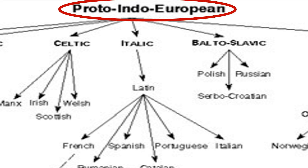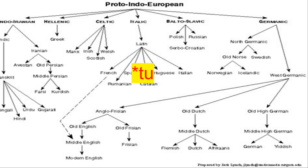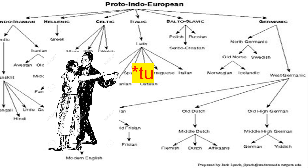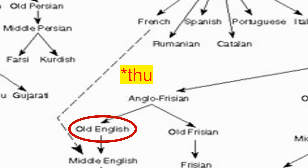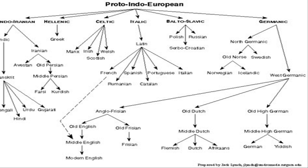Back in the days of Proto-Indo-European, the word 'to' was a second-person singular pronoun, meaning the person you're talking to. This pronoun had become 'thou' in the days of Proto-Germanic, 'thou' in early Old English, and then later in Old English settled on 'thou'.